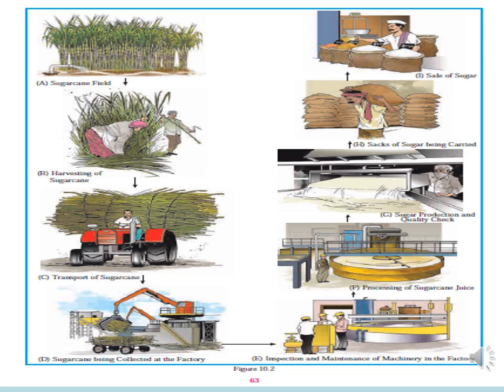If you look at the picture and follow the arrows, you will see picture A is a sugarcane field, followed by picture B showing harvesting of sugarcane, then transport of sugarcane, then sugarcane being collected at a factory, then inspection and maintenance of machinery in the factory, then processing of sugarcane juice. Picture G shows a man with sacks of sugar being carried, and the last picture is the sale of sugar.